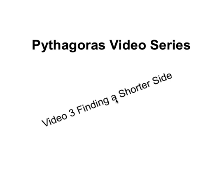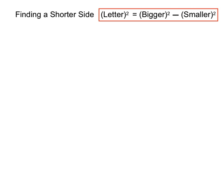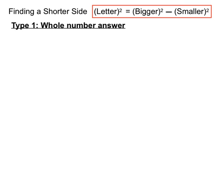Hi and welcome to the Pythagoras video series video 3. This time we're looking at finding a shorter side. When we find a shorter side, we'll stick to the program of putting the letter first and squaring it, equal to the bigger of the two other numbers and squaring them with a minus in between. That's the big difference—we have a minus in between.